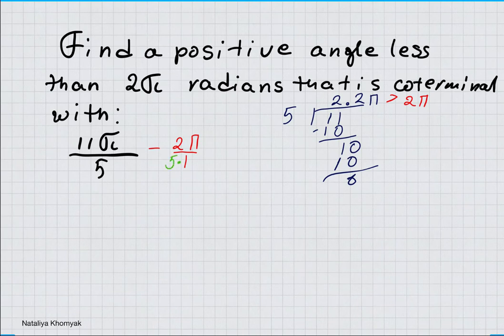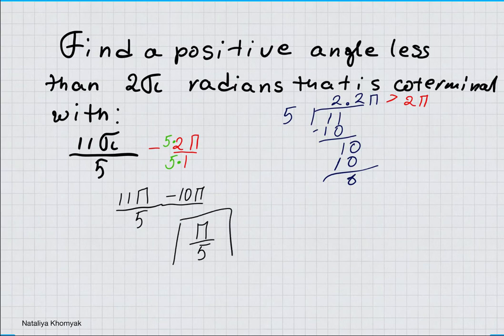Whatever you do to the denominator, you have to do the same thing to the numerator, times 5. So now we have 11π/5 minus 10π/5. 11π minus 10π, we have just 1π left out of 5, which is one-fifth of π. This is more than 0 because it's positive and it's less than 2π. So π/5 is our solution.